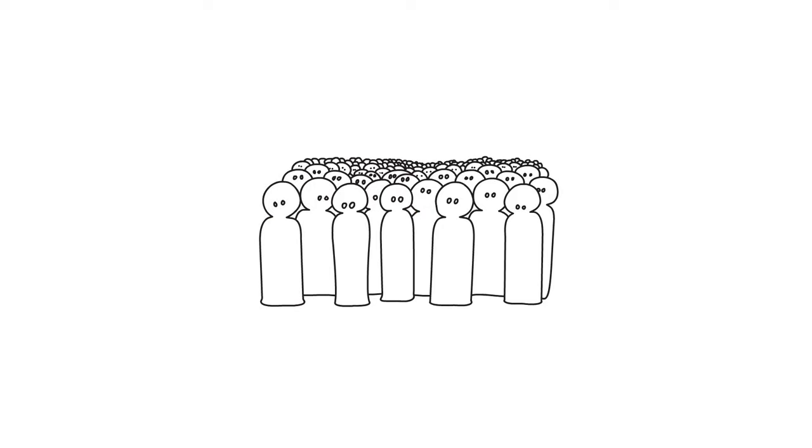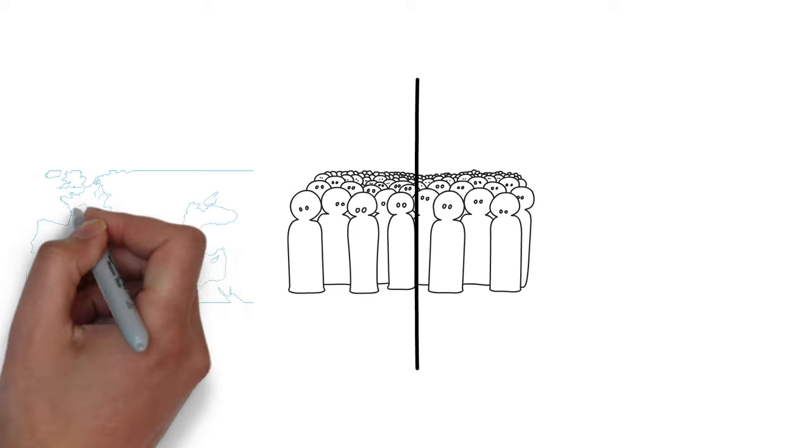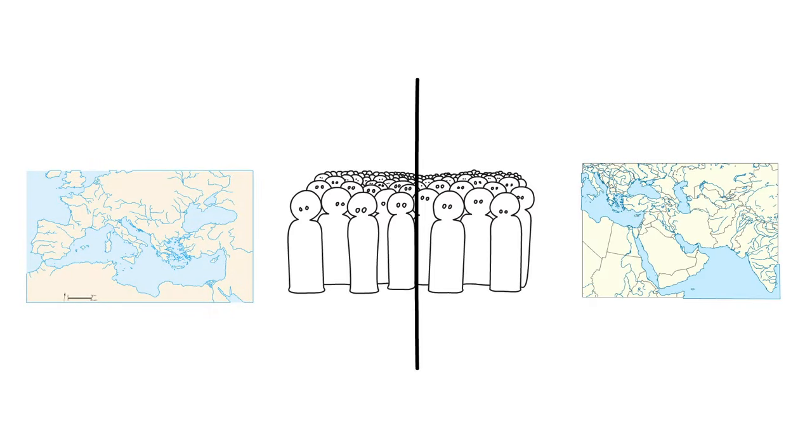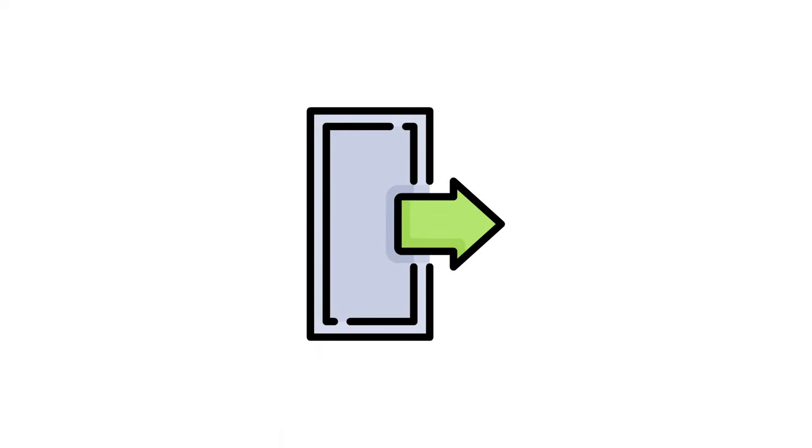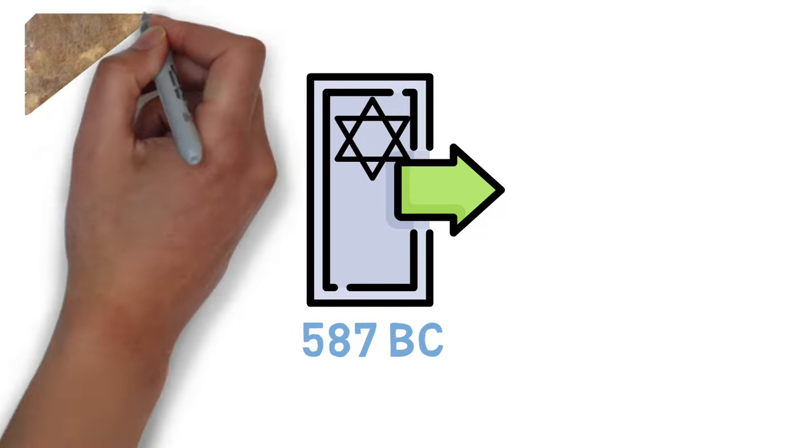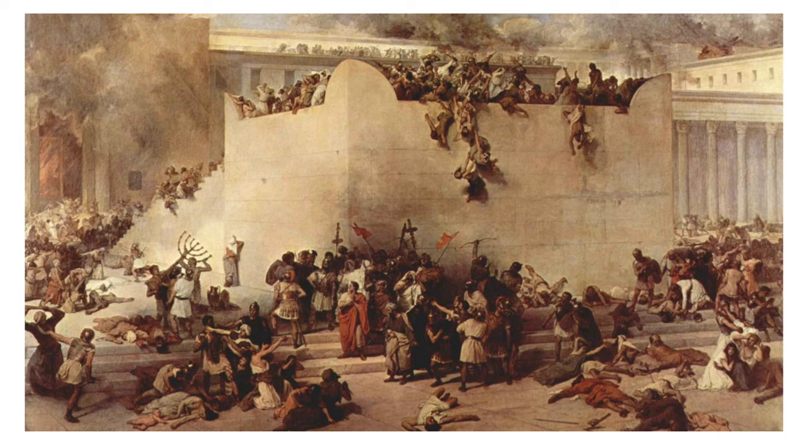Around that time, the population split into two, with half moving into Europe and North Africa and the other half remaining in the Middle East, which historically does correspond with the expulsion of the Jews in 587 B.C. by Babylonian King Nebuchadnezzar after the destruction of the First Temple.